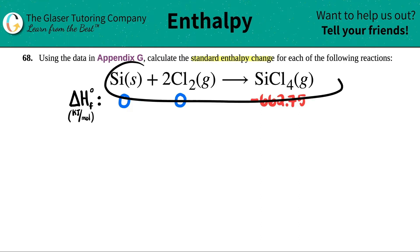We have this reaction right here. Silicon solid plus two chlorine gases, Cl2 gas, yields SiCl4. Now I see that there is already a coefficient here, which means that this equation is balanced, so I don't have to check if it's balanced or not.